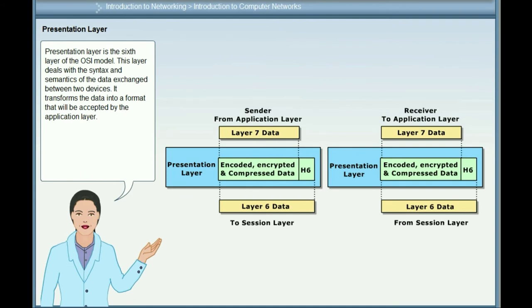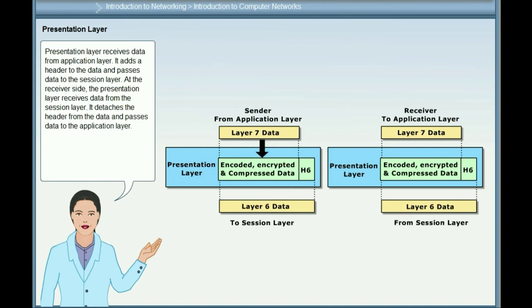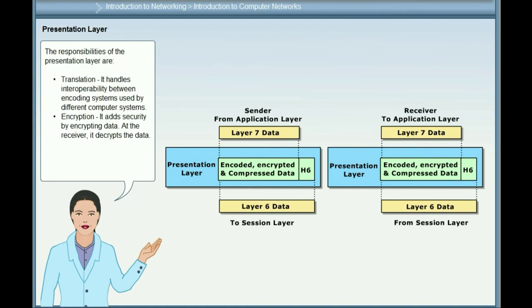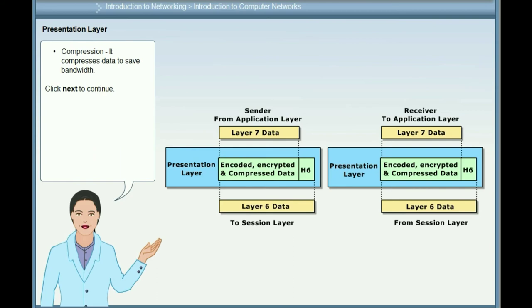The Presentation layer is the sixth layer of the OSI model. It deals with the syntax and semantics of the data exchanged between two devices and transforms data into a format accepted by the application layer. It receives data from the application layer, adds a header, and passes data to the session layer. At the receiver, it detaches the header and passes data to the application layer. Responsibilities include: Translation — handles interoperability between encoding systems; Encryption — encrypts data for security and decrypts at the receiver; Compression — compresses data to save bandwidth.